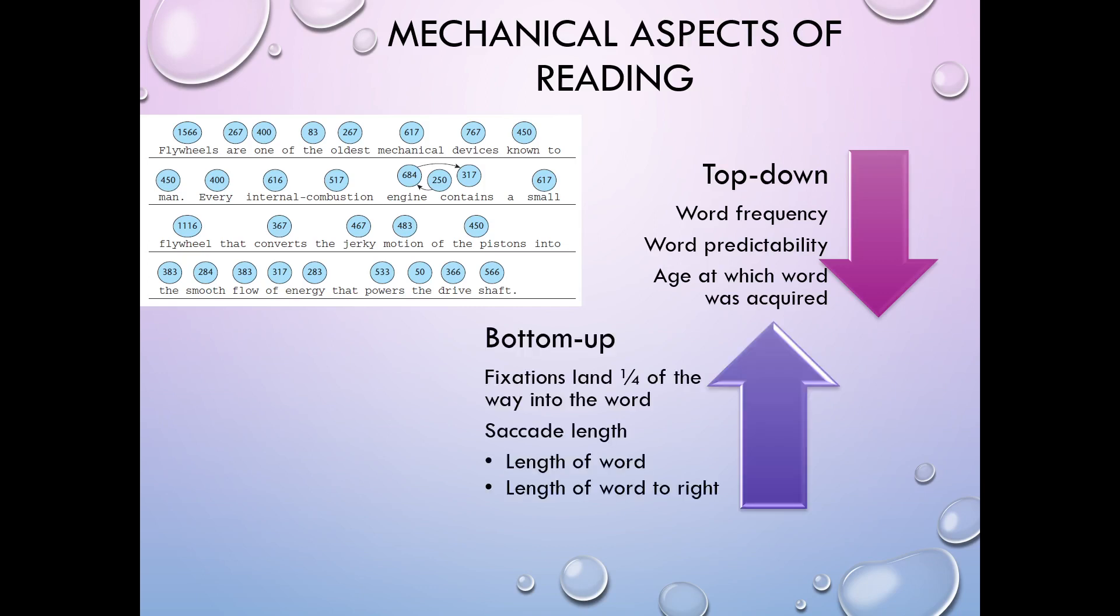On the bottom-up side, fixations typically land about a quarter of the way into the word. So they tried to put the bubbles in this diagram basically in the spot where you would expect the person's eyes to be fixated within that word, but it's about a quarter of the way into the word. So with a short word, it's probably going to—your fixation will probably cover the whole word. If it's a longer word, like let's say flywheel, being a quarter of the way in, you may not see the whole word in one fixation. And depending on the font size and other things, a longer word, you might have to actually move your eyes within that word to collect all of the letters. If you're not able to really predict what the rest of it must be based on your experience and stuff, you may have to actually move your eyes within the word.